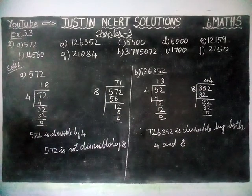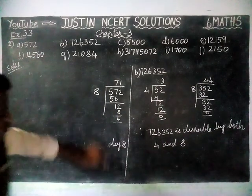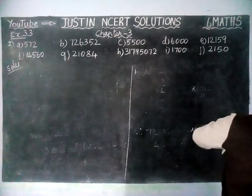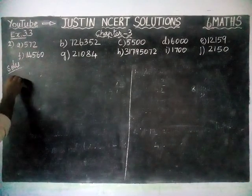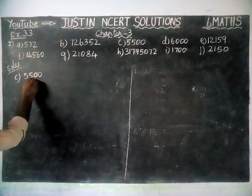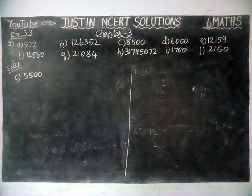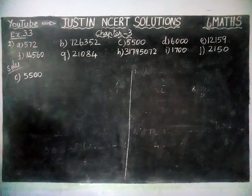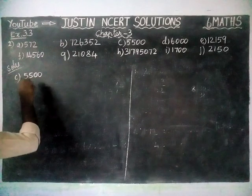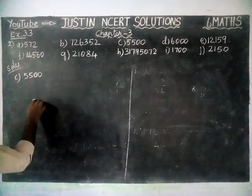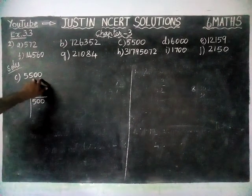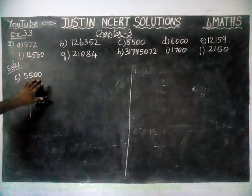Next, option C: 5,500. Here the last 2 digits are 00. If the last 2 digits are 0, we don't have any problem — that number is divisible by 4. We can say that since last 2 digits are 0, the number is definitely divisible by 4 when divided by 4.